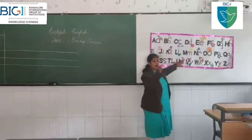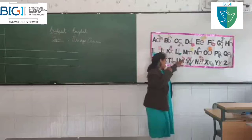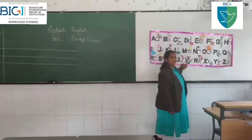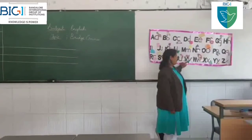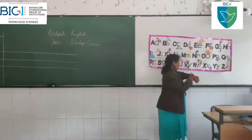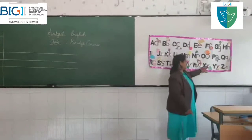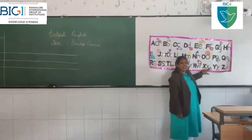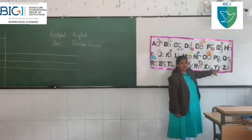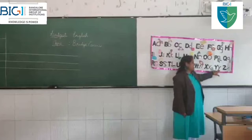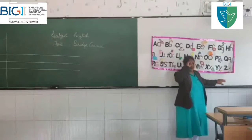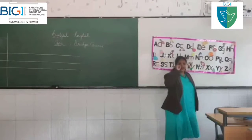U is for umbrella. V is for vegetables. W is for watch. X is for xylophone. Y is for yellow. Z is for zero.